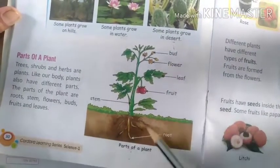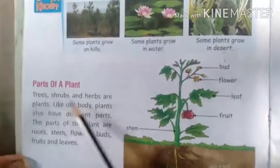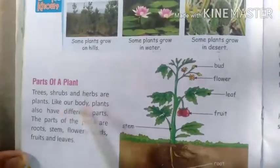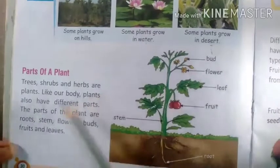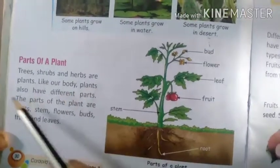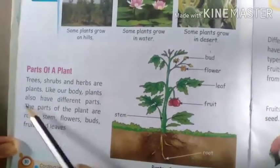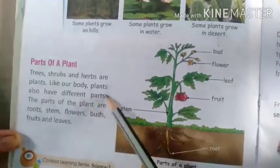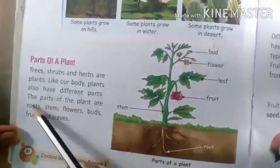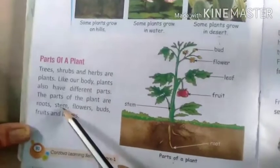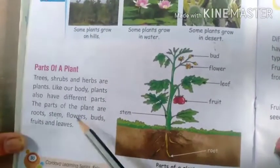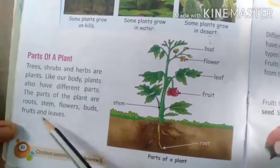There are six parts here. Trees, shrubs and herbs are plants. Like our body, plants also have different parts. The parts of the plant are roots, stem, flowers, buds, fruits and leaves.